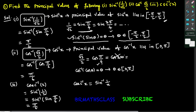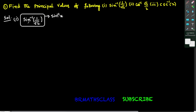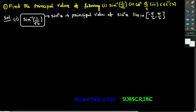Find the principal values of the following. If you observe sin inverse of 1 by root 2, it looks like sin inverse x. The principal value of sin inverse x lies in the closed interval minus pi by 2 comma pi by 2.